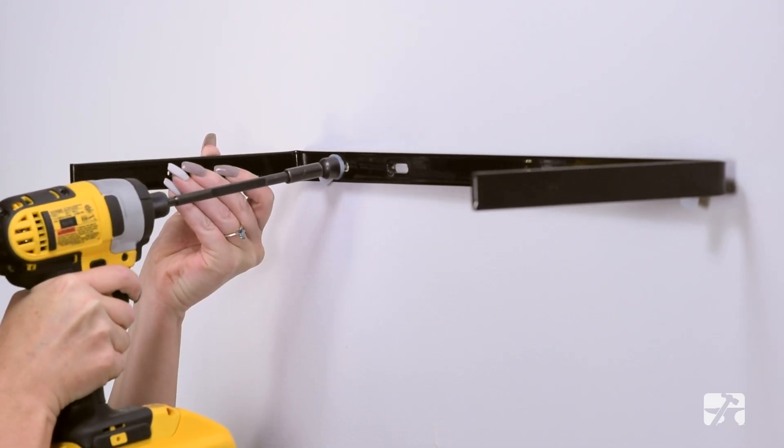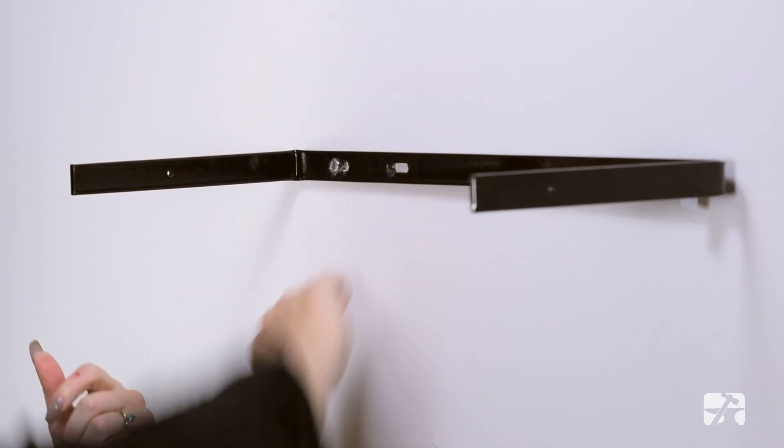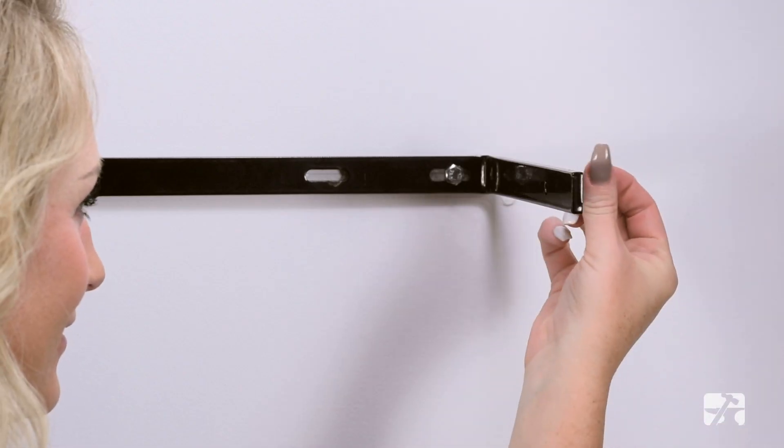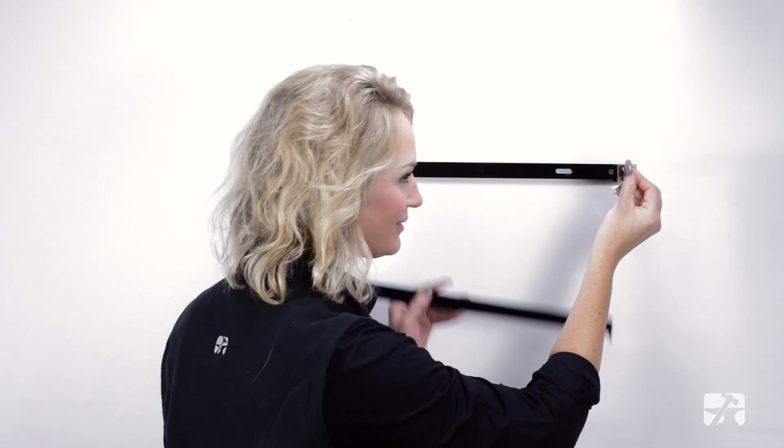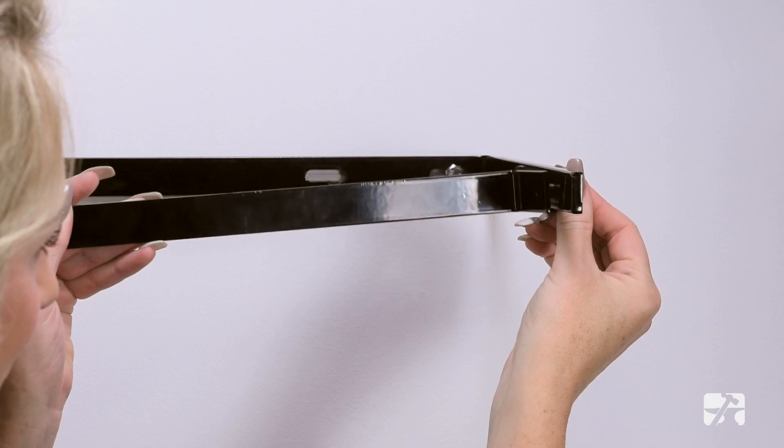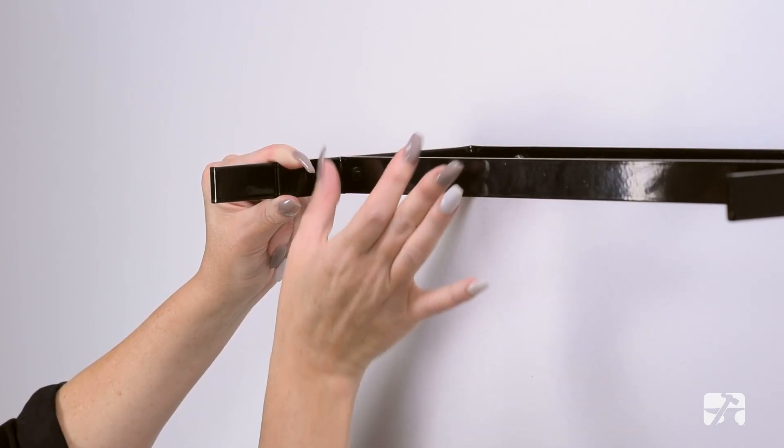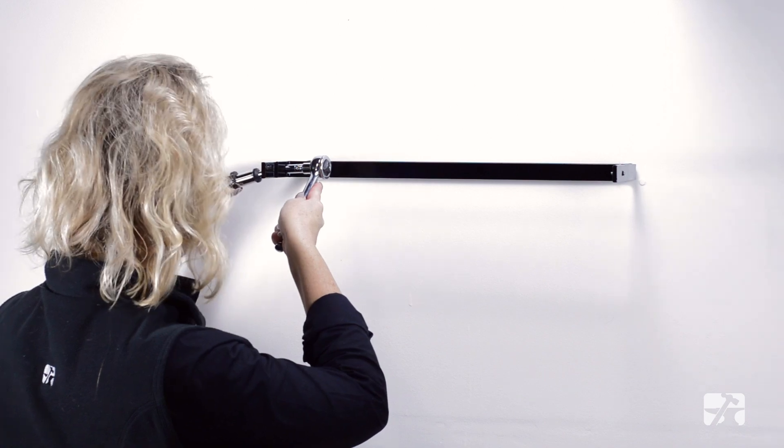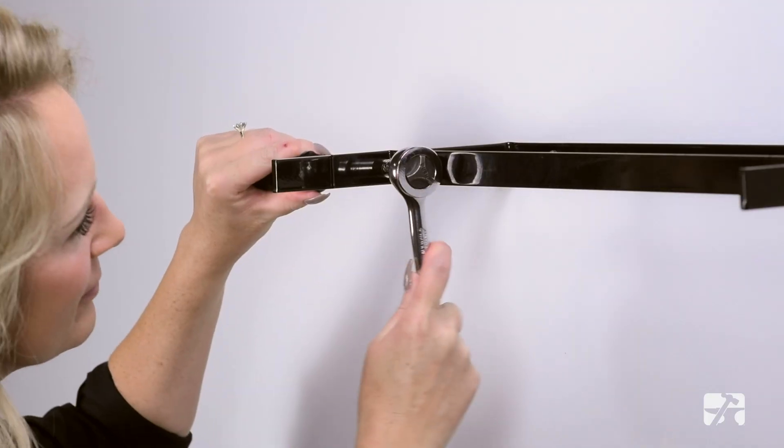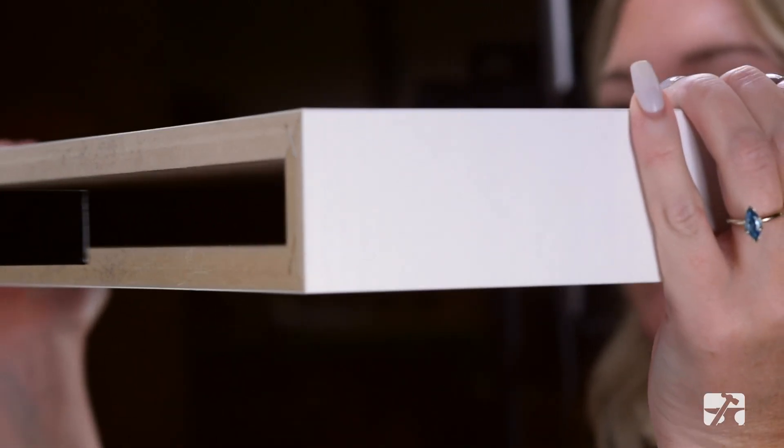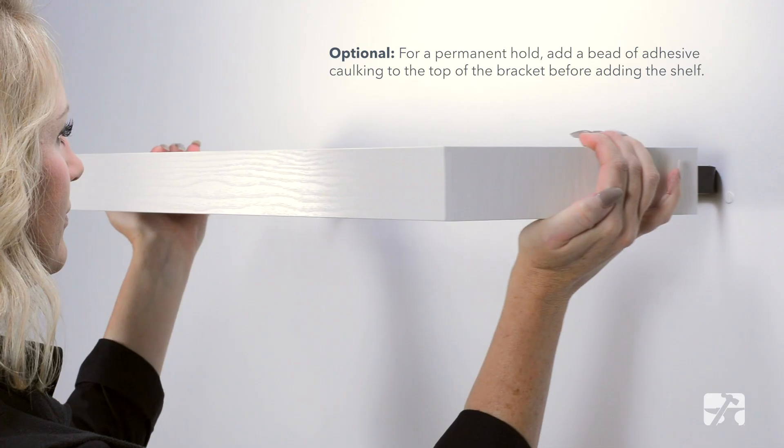Then, remove the surface protection by pulling the tabs. Line up the interior bracket rib holes to the holes on the outer bracket and insert the included screws. Place the nuts on the screws and hand tighten them. Use a socket set and a screwdriver to tighten the nuts entirely. Slide the low profile shelf over the bracket and you're done.